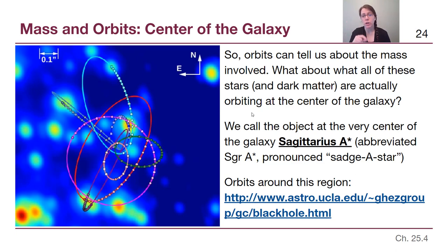But every single one of these objects where the points are showing observations and the orbit color coded in different colors is showing us what we were able to figure out from Newton's equations that came up in chapter three. Every single one of those orbits is an independent measurement of how much mass Sagittarius A star has.